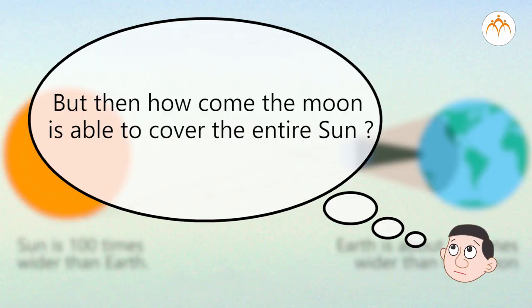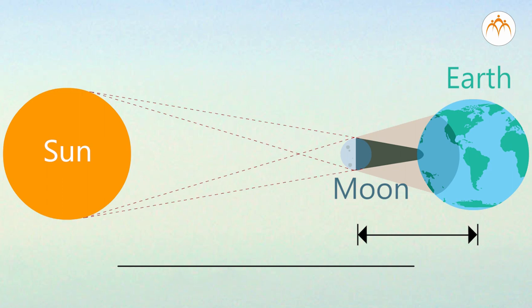But then how come the moon is able to cover the entire sun? This has to do with relative distance between these three. Moon is much closer to earth. Moon is about 400 times closer to earth.